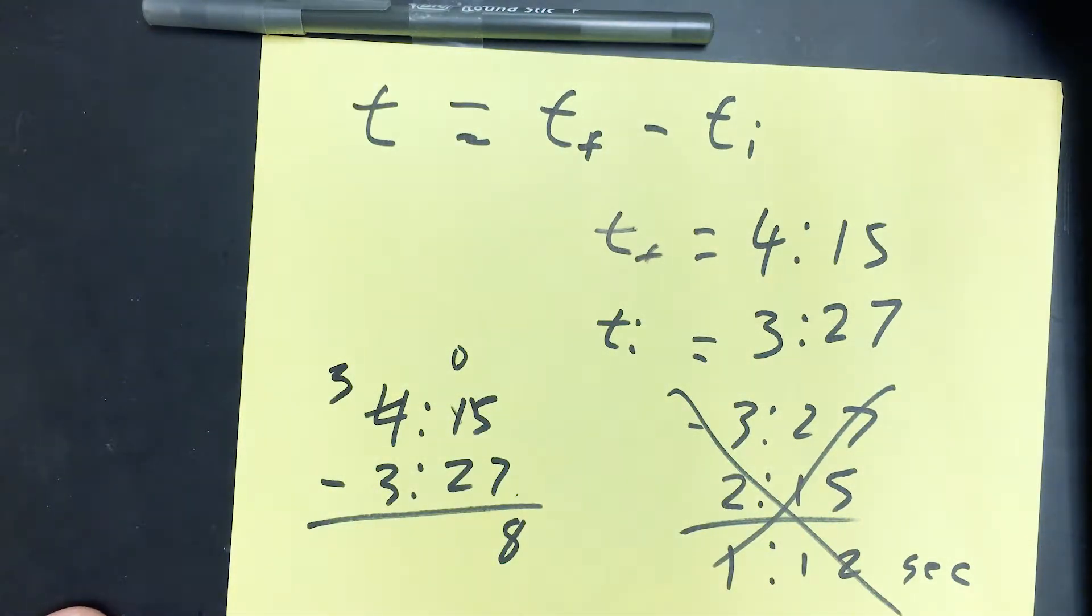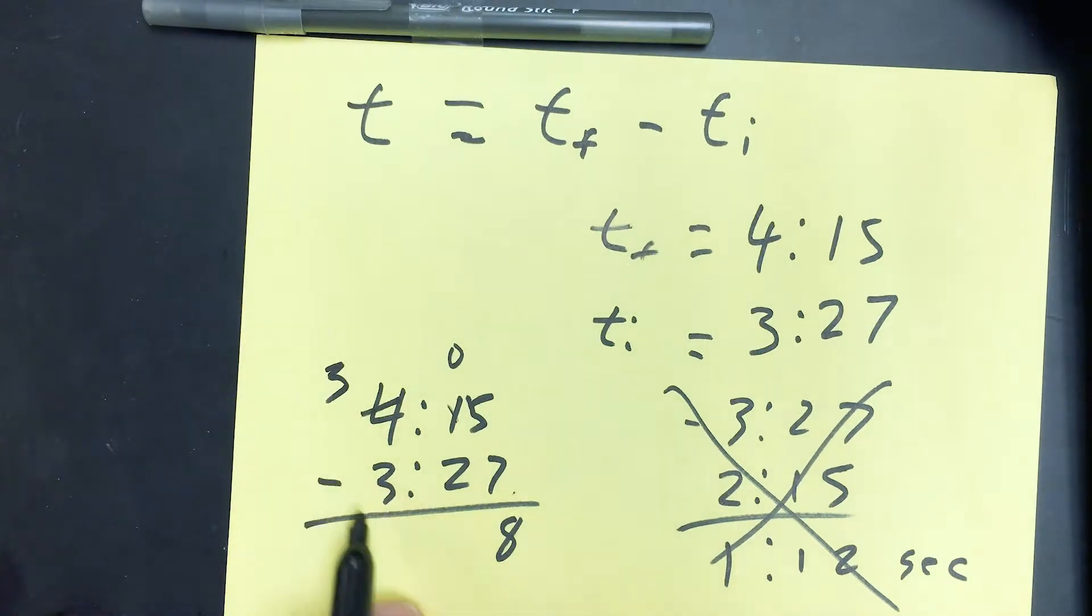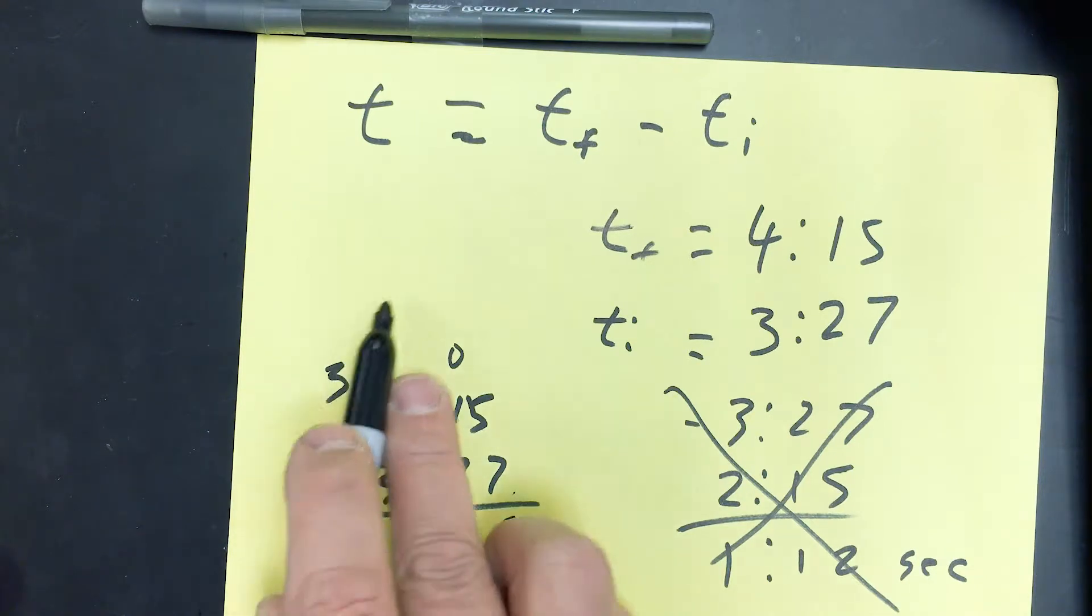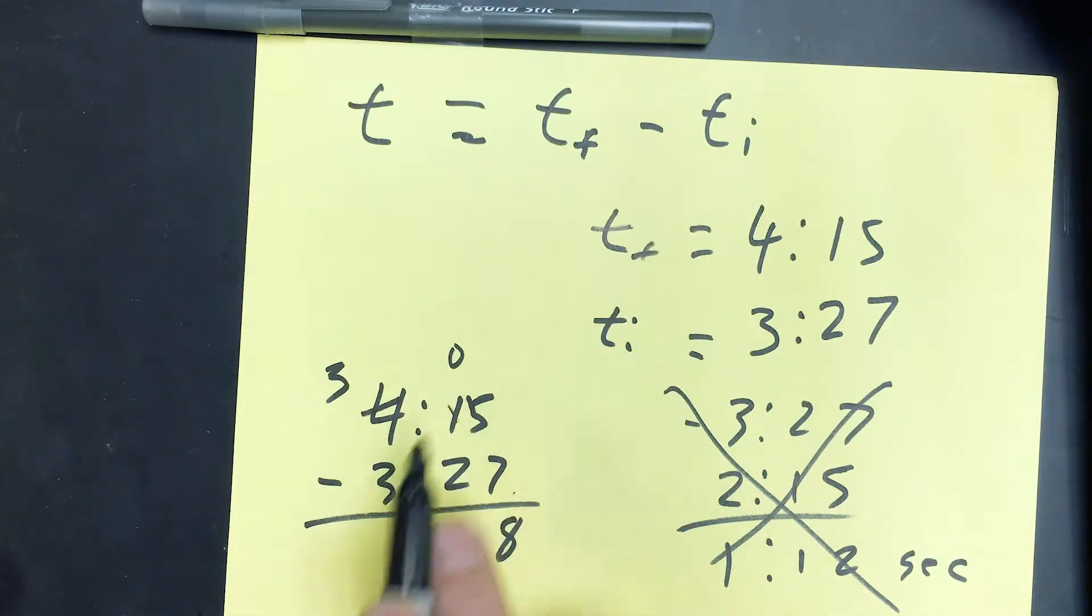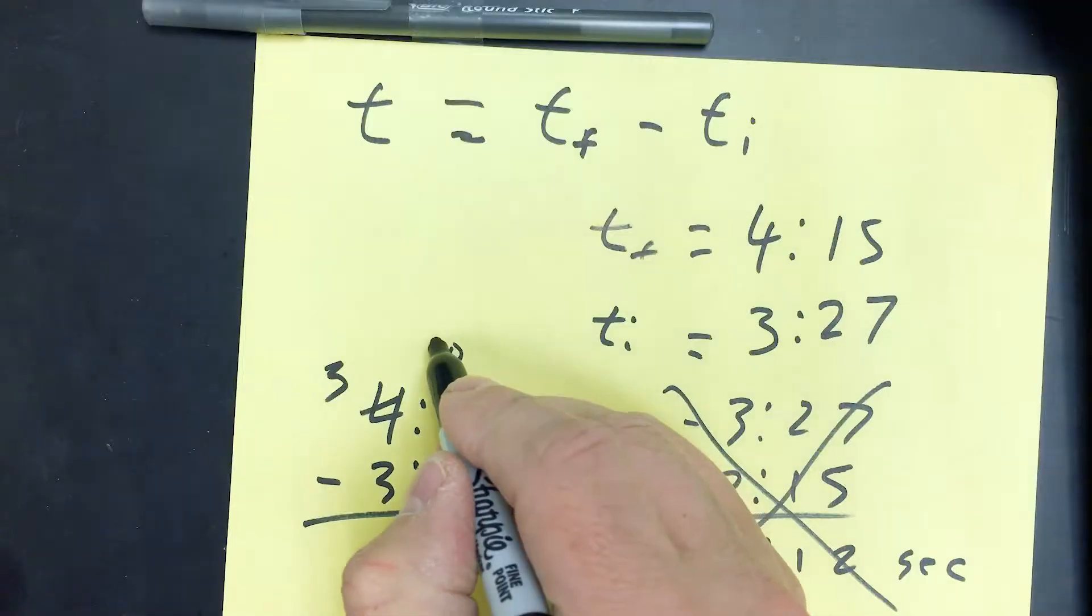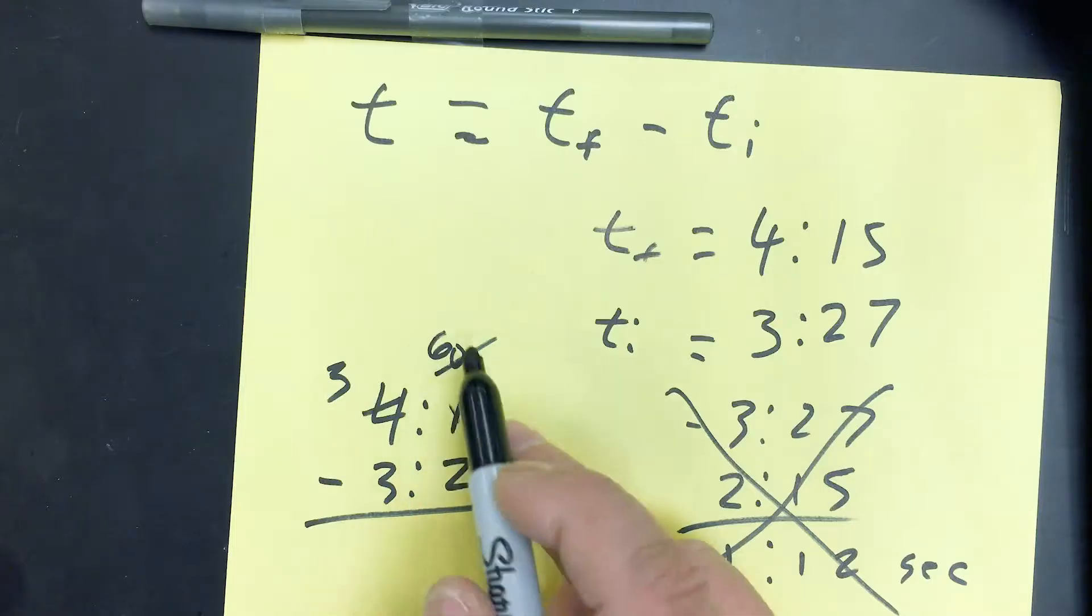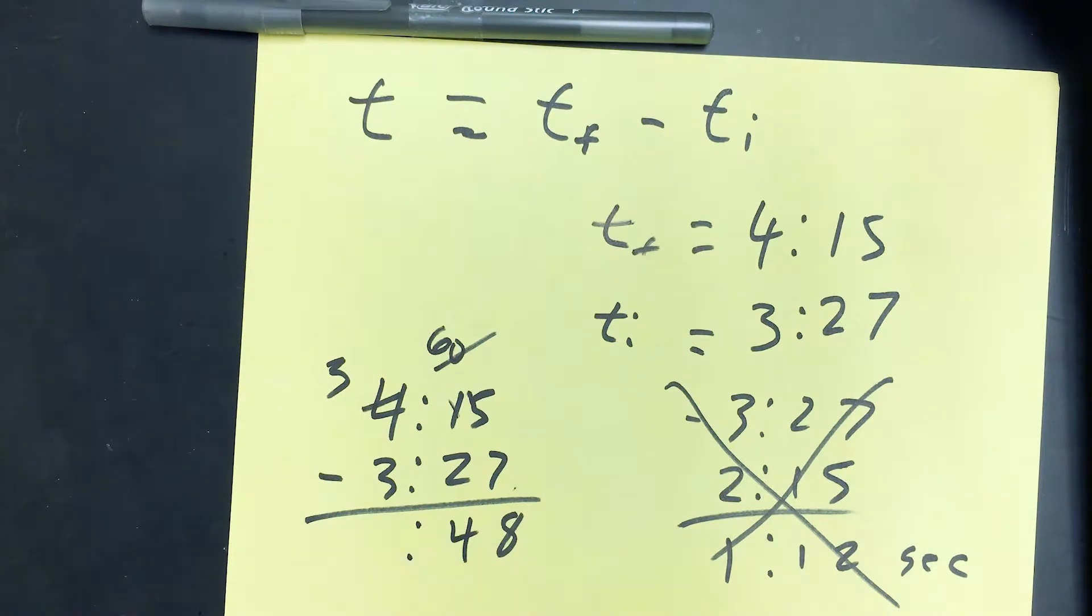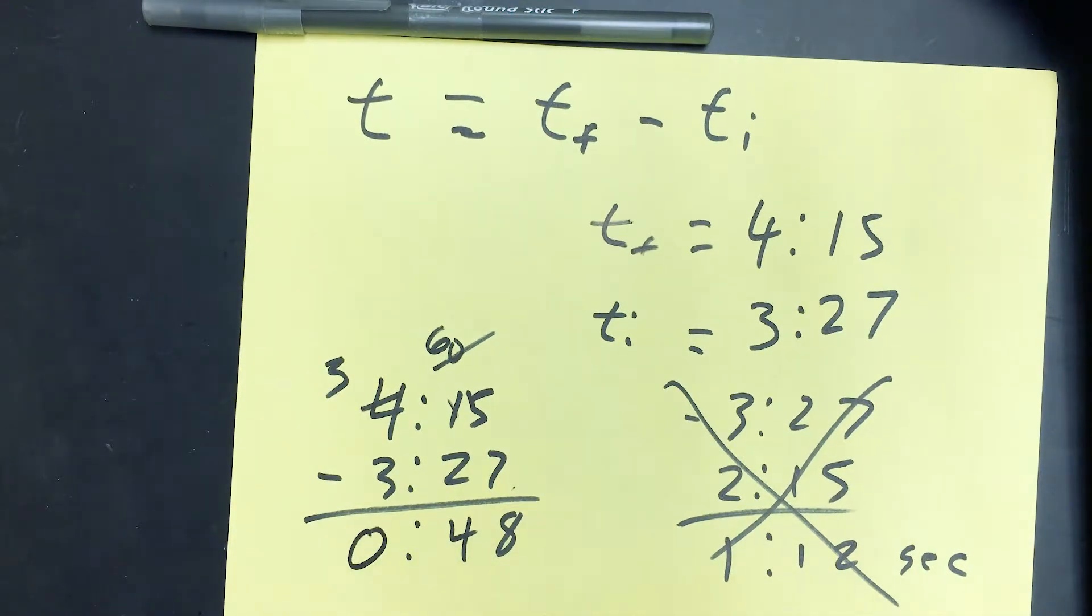We're taking a minute off of here. This is going to be a really fast lap, by the way. We take a minute off of here and we have to take 60 seconds over. So we're going to take the 6 off of the 60 seconds and we're going to put it here. The 0 becomes a 6. 6 minus 2 is 4. We have 0 minutes and 48 seconds.